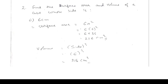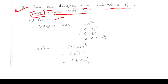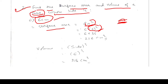Question 2: Find the surface area and volume of a cube whose side is 6 cm. The formula for surface area of a cube is 6a². Side is 6 cm, so 6 × 6² = 6 × 36 = 216 cm².